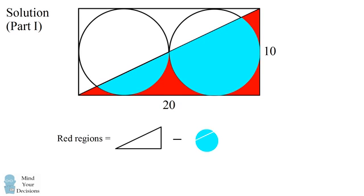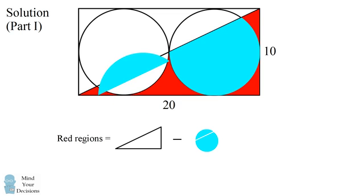It looks like these two pieces actually join to form one circle. You can notice this by symmetry, and I will illustrate it by putting these two pieces together.